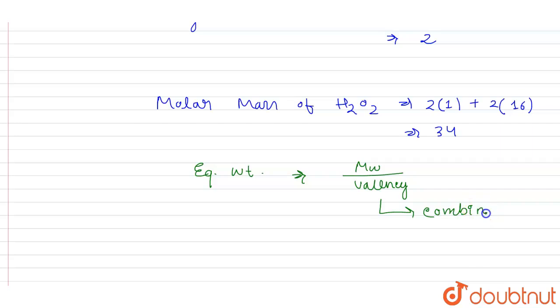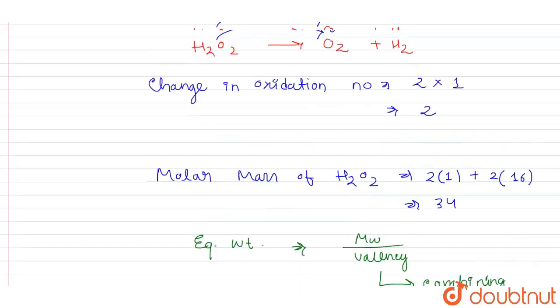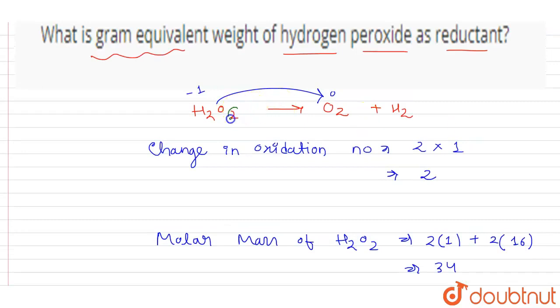In simple language, combining power refers to the change in oxidation number, and we can see the change in oxidation number for two oxygen atoms is two.